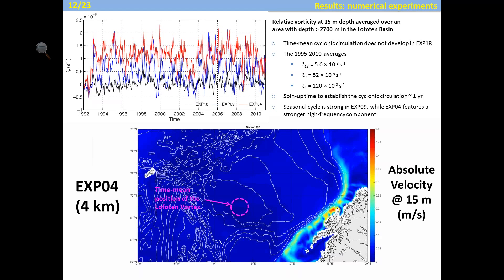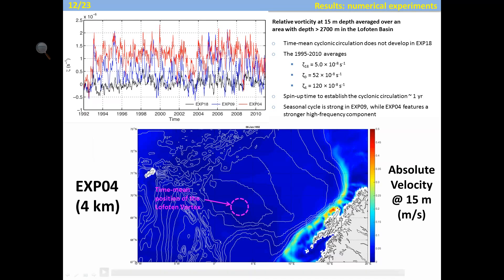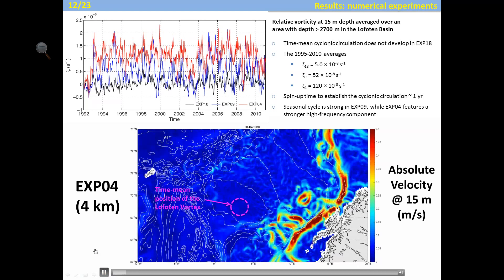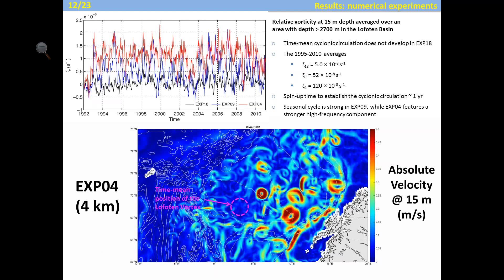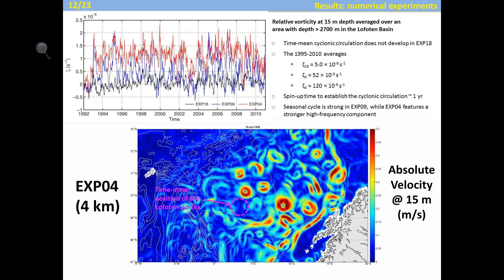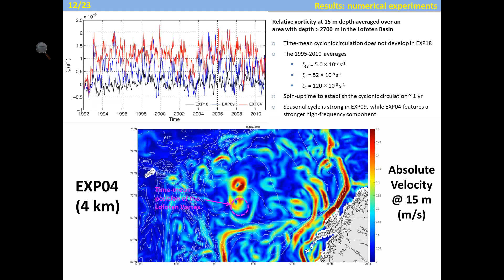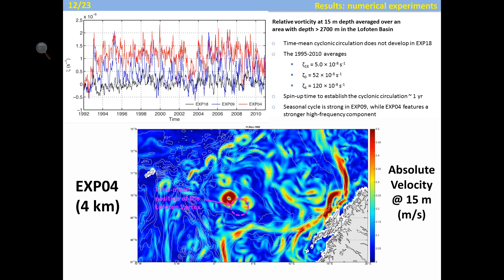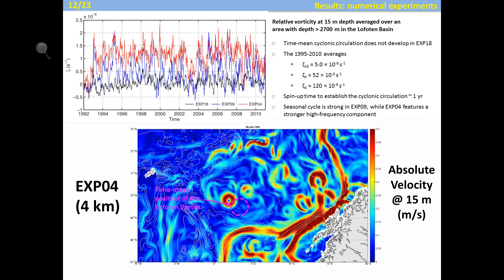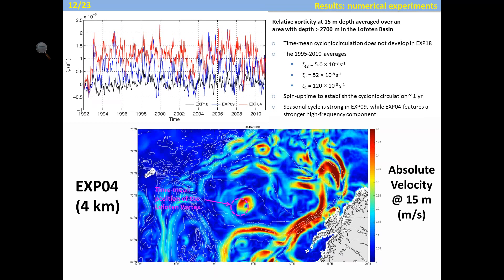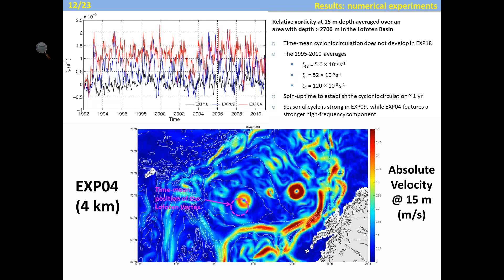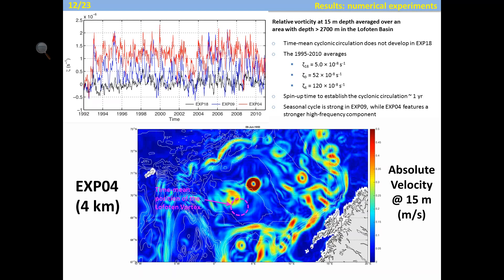The spin-up time to establish the cyclonic circulation is very short — about one year. In the 4 km experiment, eddies are formed quickly from the initial conditions, and the Lofoten Vortex develops as incoming eddies arrive and merge. During the animation you can see how the first eddy arrives and how multiple merging events occur, with the vortex accelerating after each merge.